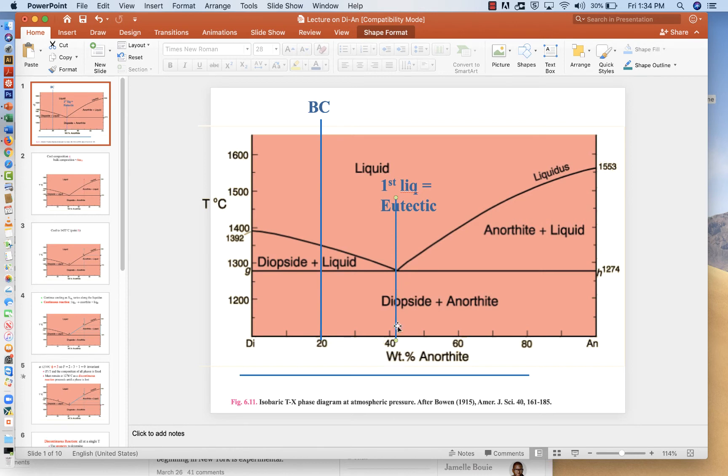Now, as we take our rock and heat it up to 1274, something else that's maybe a little bit strange is going to happen. We'll continue adding heat, but the temperature will not increase. All of the energy that we add to the system will cause both diopside and anorthite to melt.